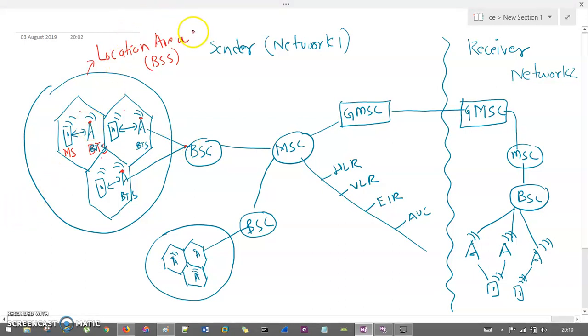So, if this is my location area one, then this is going to be the location area two, which is having their own BSC. So, each BTS or every BTS of this cluster is connected with one BSC, and this location area two is having BSC, and all other BSCs are connected with one single MSC.